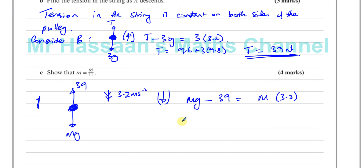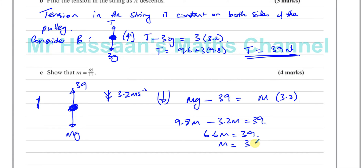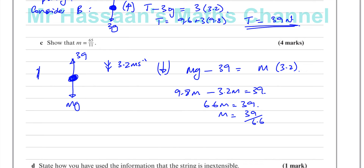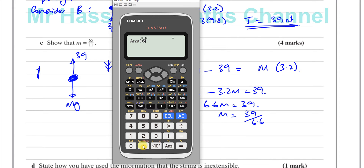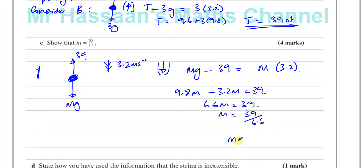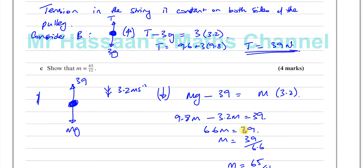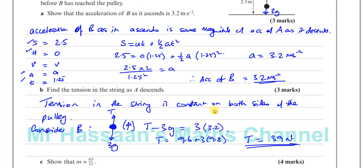Rearranging: 9.8M − 3.2M = 39, so 6.6M = 39, giving M = 39 ÷ 6.6 = 65/11. That's exactly what we had to show. So M = 65/11. That's part C done.